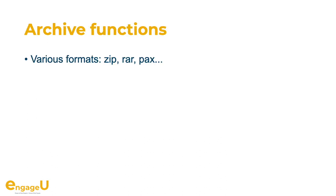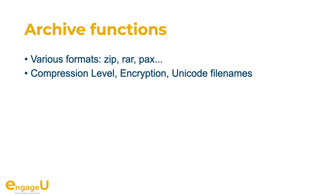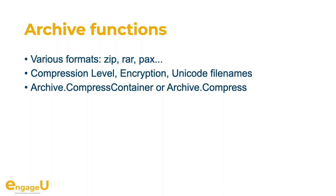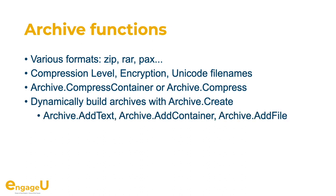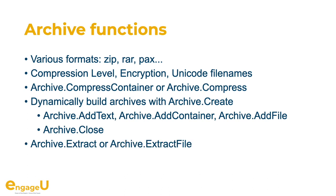We have archive functions that support various formats like zip, rar, 7-zip, and others. You can decide the compression level, what kind of encryption you like, and we support Unicode filenames. You can compress directly a container value or use archive compress to compress a list of files. We support dynamic building of archives using the create function — you can loop through your data and call add text, add container, or add file depending on what you want to add. When you close the archive you get back the archive or can stream it directly to disk. We also have archive extract to extract all files of an archive into a temporary folder or extract one file and get it back as a container value.